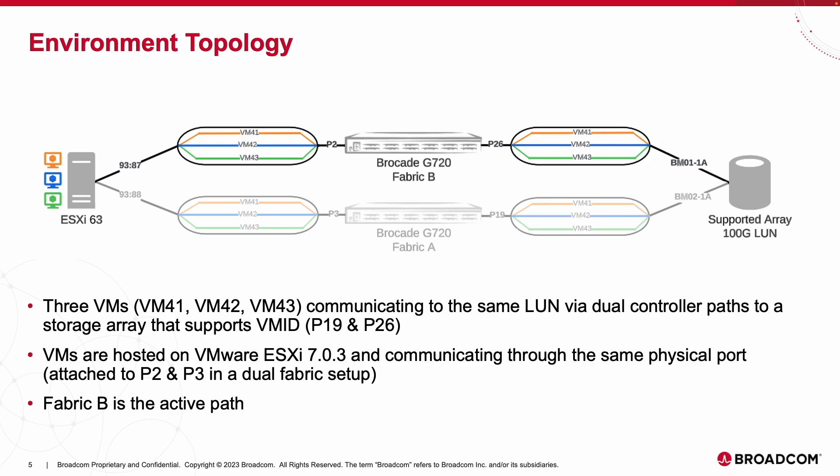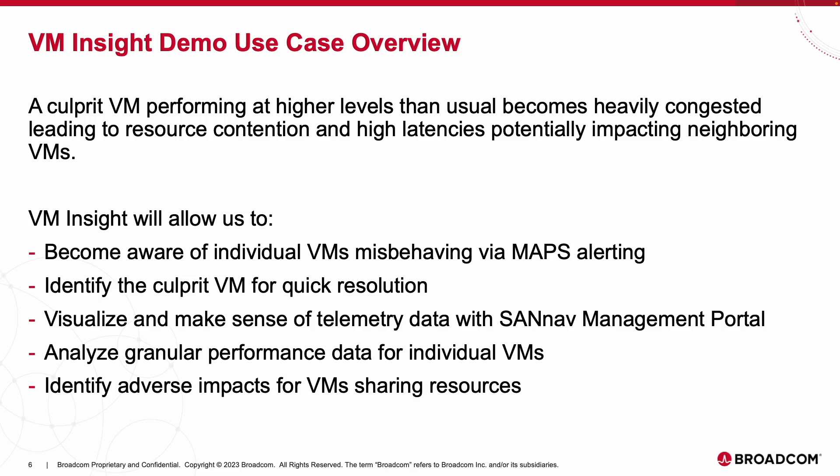We will be touching on the topology in our demo as well. To provide a little more context, the use case we will be covering involves a corporate VM performing at higher levels than usual, becoming heavily congested, leading to resource contention and high latencies, potentially impacting neighboring VMs sharing the same resources. With VM Insight, we will be able to identify which one of the three VMs is causing the issue by bringing attention to any triggered MAPS alerts, analyzing performance and latency metrics via SAN Nav Management Portal, as well as determining if there are any adverse impacts. Let's get started with the demo and see how Brocade is enabling VM-level visibility in the SAN.